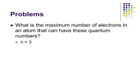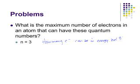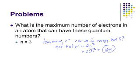Now it's time to start doing some problems. Our first question is: what's the maximum number of electrons in an atom that can have n equal to 3? If n equals 3, we know the maximum number of electrons in that energy level is equal to 2n². Two times 3 squared equals 18, so 18 electrons can be in energy level 3.